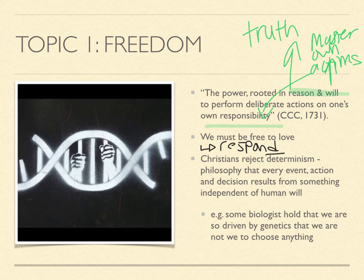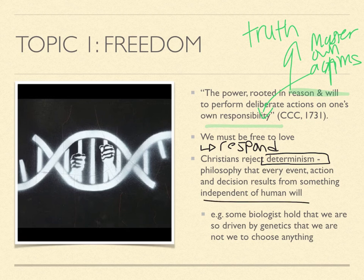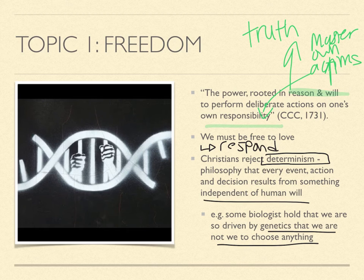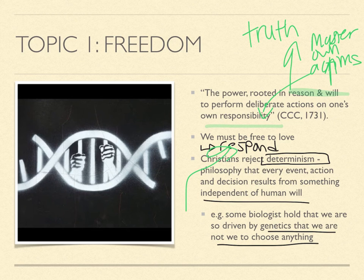Christians reject the idea of determinism. Determinism is the idea that every action, event, and decision results from something independent of human free will. It comes in many forms — philosophical determinism, biological determinism. For example, a biologist might hold that we are so driven by genetics that we're not actually able to choose anything. Ultimately, what these positions argue is that free will is an illusion. We reject this idea of determinism, obviously, for the philosophical reason that if we're not free, we can't choose God.